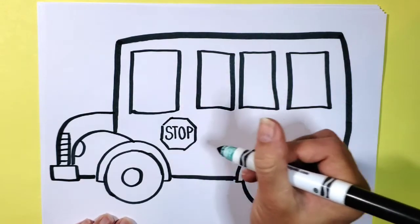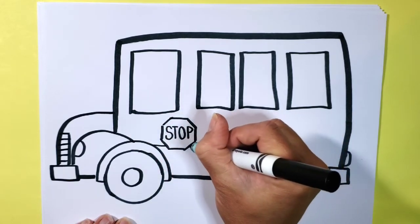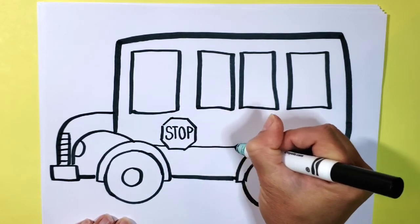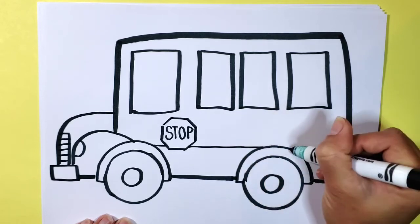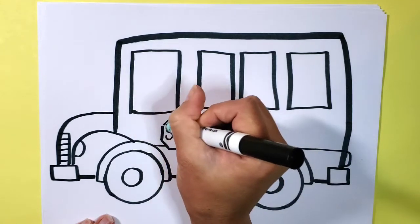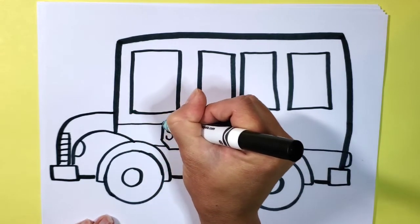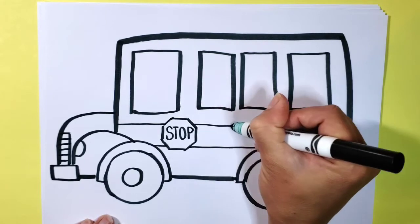Next I'm going to make a line that starts kind of along the bottom of the stop sign and it's going to go all the way across the bus to the very back. Then I'm going to do the same thing a little bit higher up so it's going to start right here and run into the stop sign and then go all the way to the back.